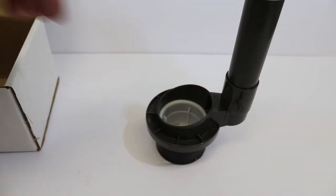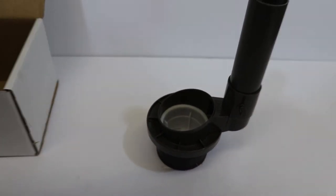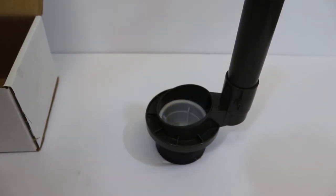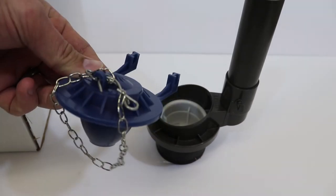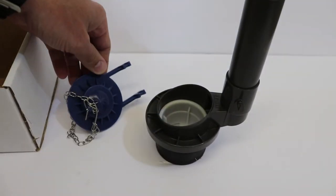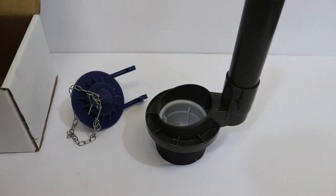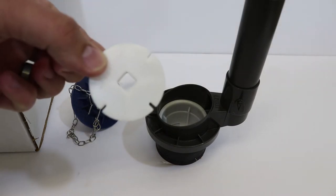Right there we've got the flush valve. We've got the flapper and chain. And this here is the tool to remove it.